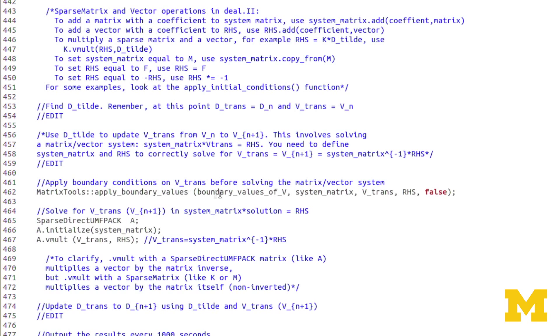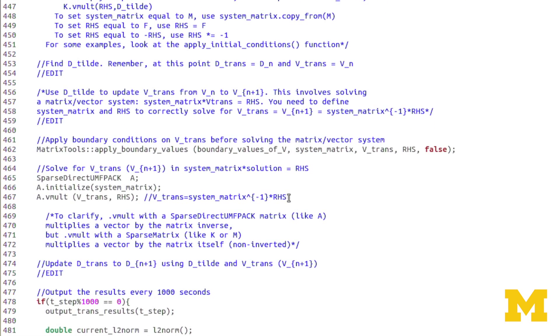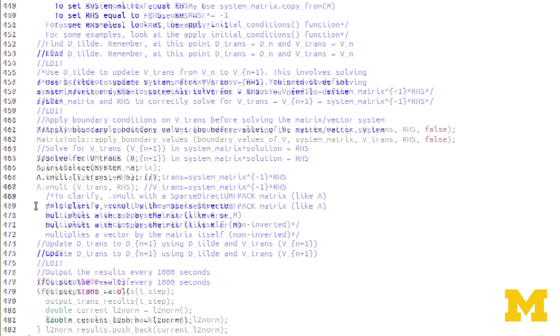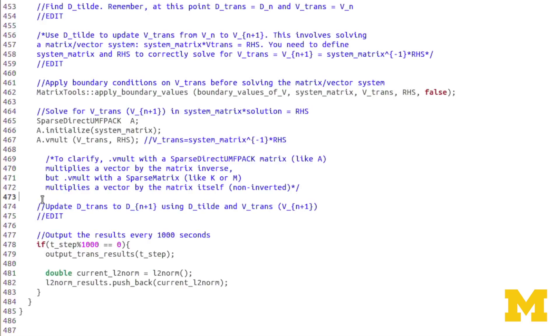Once you've done that, we apply boundary values of v. Again, because vtrans, or vn plus 1, is the solution vector we're solving for. So we apply boundary values of v, using the system matrix that you've defined, and the rhs vector. And that matrix inversion happens here with these three lines. Again, using the sparse direct UMF-PAC matrix, A. Once you've done that matrix inversion, and vtrans is now equal to vn plus 1, you can use d tilde and vn plus 1, vtrans, to solve for dn plus 1. And there you have the solution for this time step.